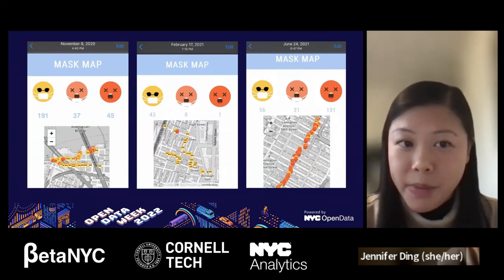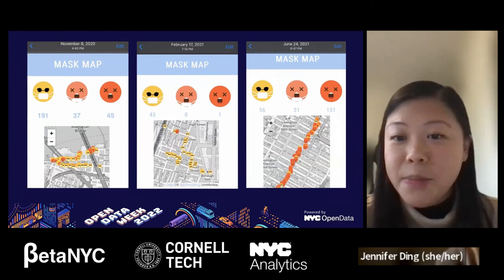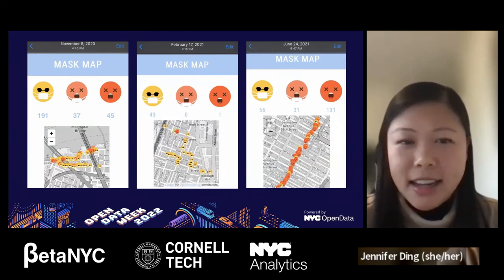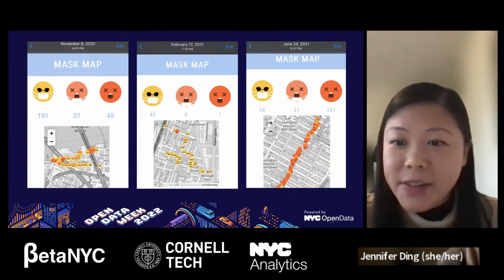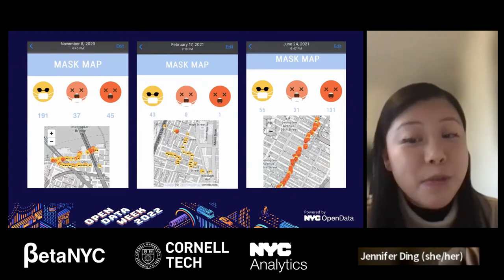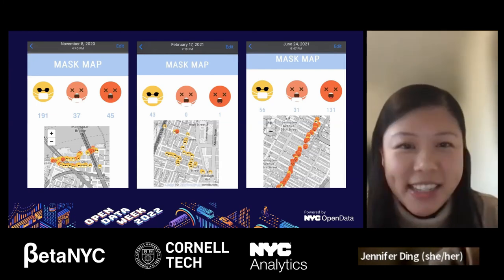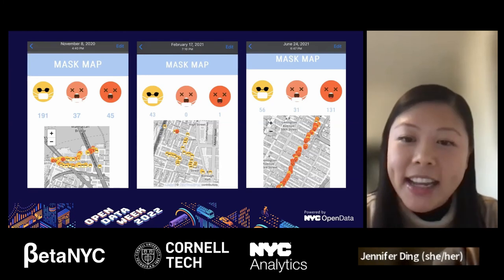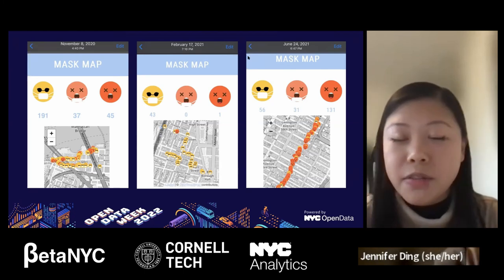Over a year of data collection, we saw many different mask wearing patterns in different neighborhoods — from the Dumbo waterfront on a November 2020 weekend, to Brooklyn Heights on a 2021 weekday evening, to 2nd Avenue in summer 2021, right before the rise of the Delta variant. It's been an interesting experience collecting and sharing this data in New York over the pandemic. In a way, it felt like a proxy for public sentiment about COVID over time.